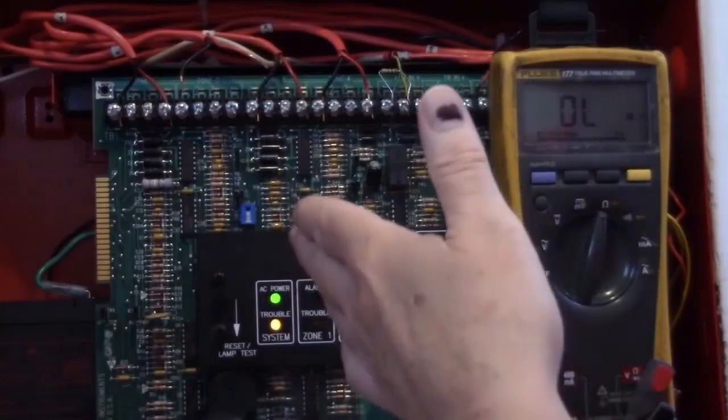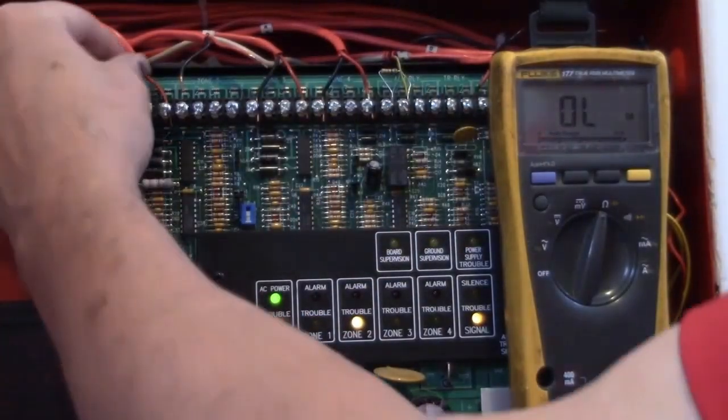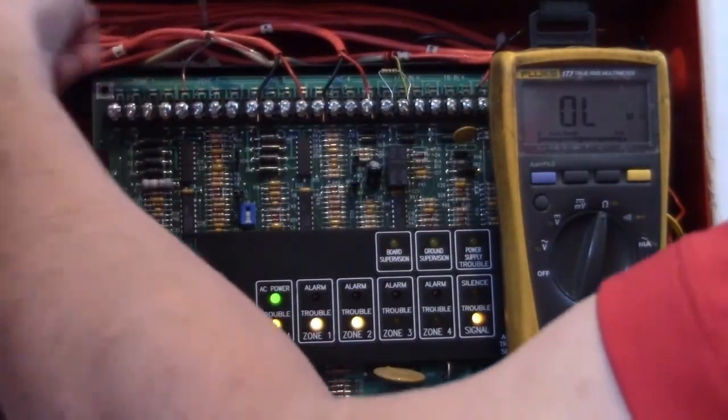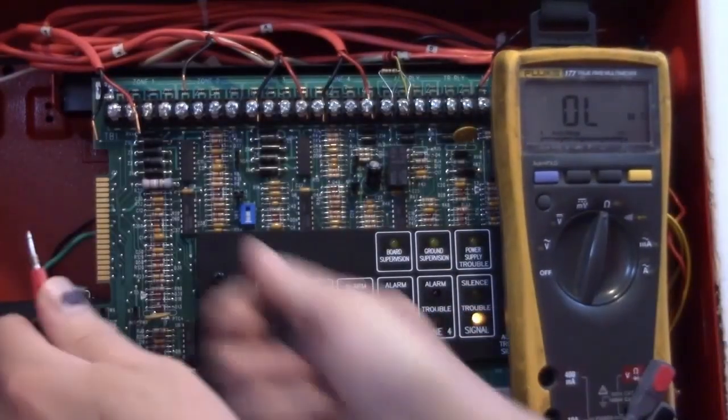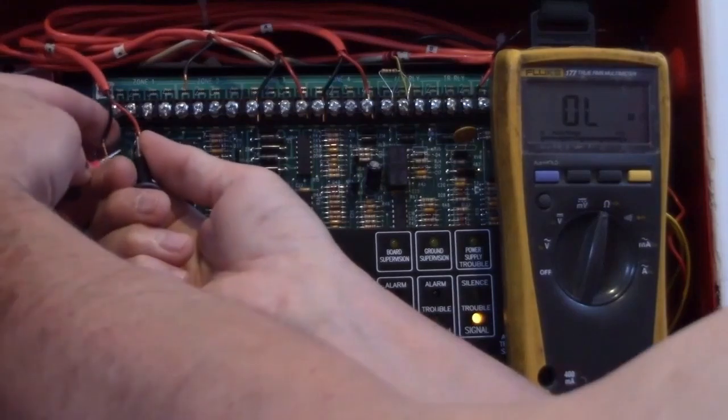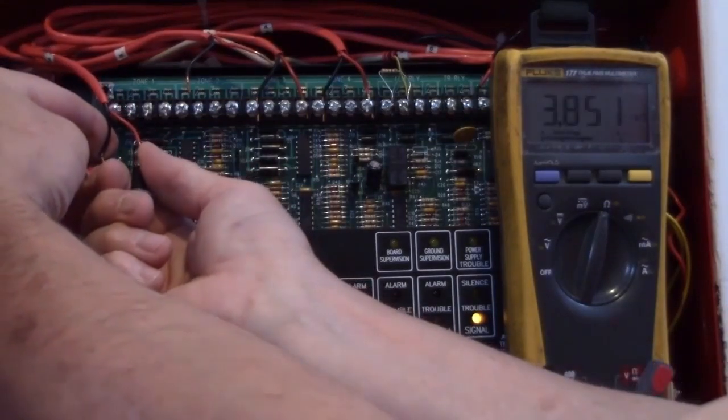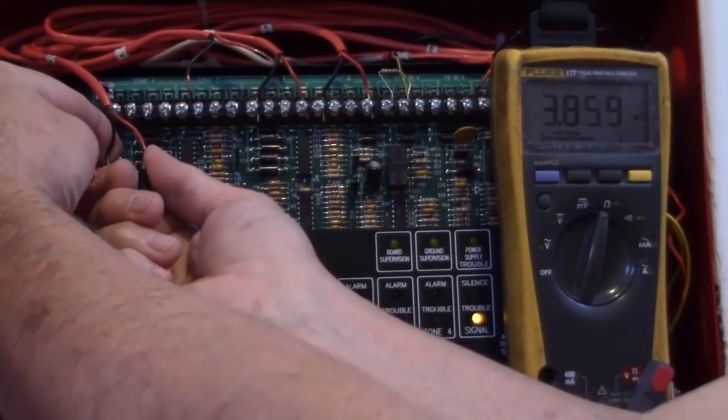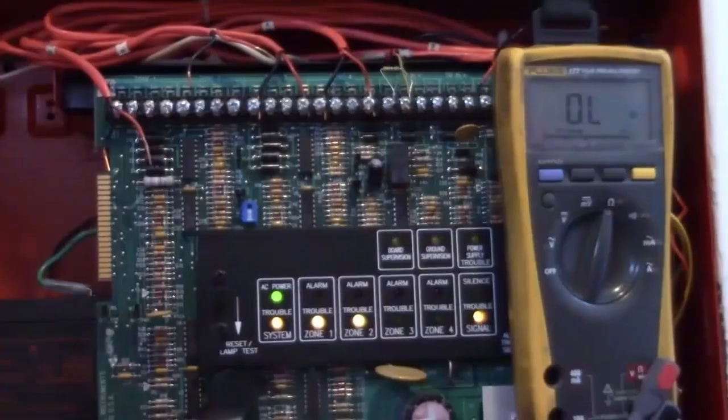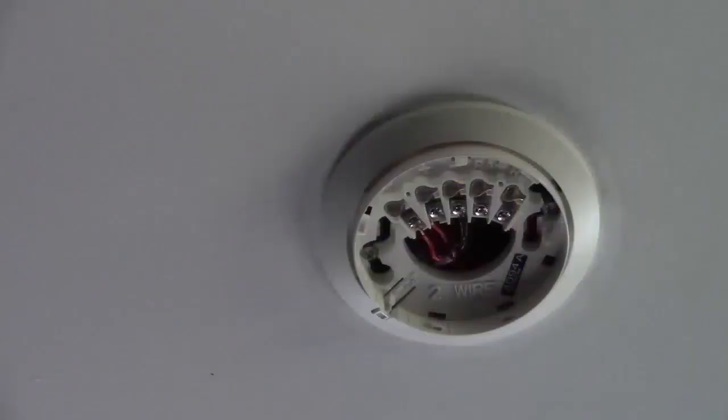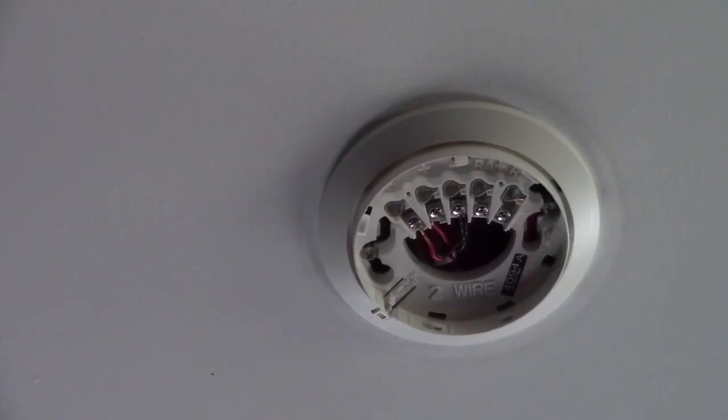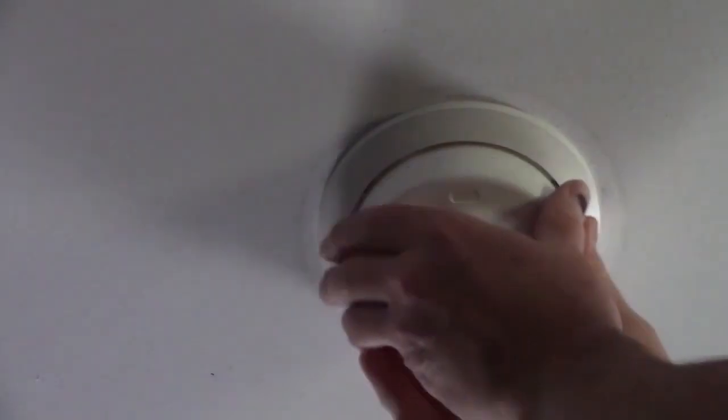If you're unsure what the resistance should be, what you can do is remove a zone that's not in trouble, measure the resistance of that circuit and you'll have that as a comparison. When we measure a zone that was in normal condition, we see that it was about 3.9 kiloohms. Make sure you record what the normal zone voltage should have been and what the end of line resistor value should be. While troubleshooting, you discovered a smoke detector had been removed. Reinstalling that device should restore the system to normal.